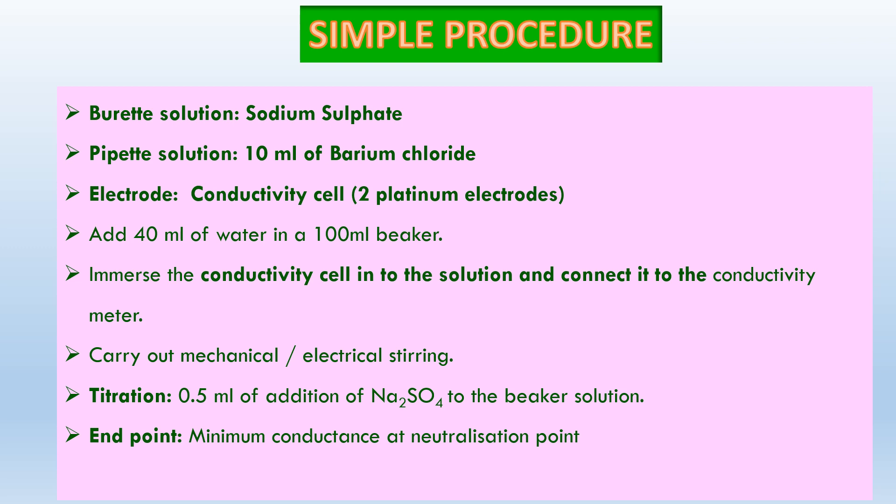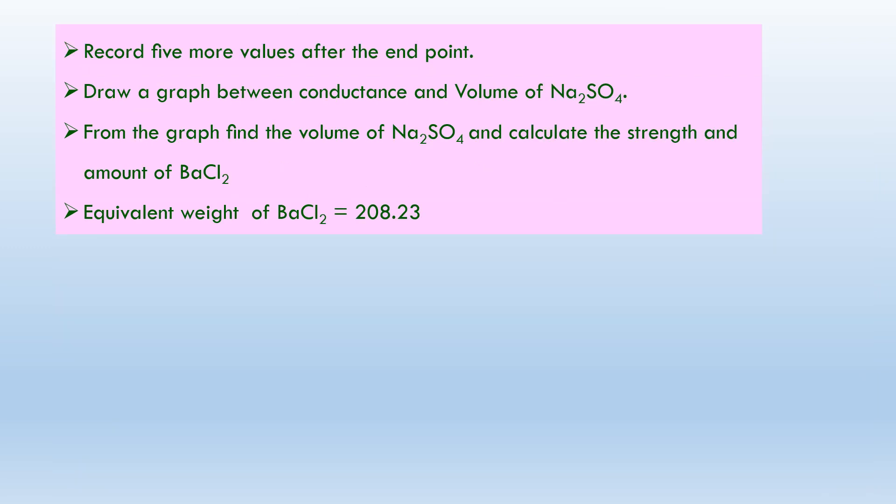Immerse the conductivity cell in the solution and connect it to the conductivity meter. Carry out mechanical or electrical stirring — you can use a stirrer mechanically or go with magnetic stirring. Add 0.5 ml of sodium sulphate to the beaker solution and measure the conductance. The end point is the minimum conductance at the reaction completion point. Record five more values after the end point.